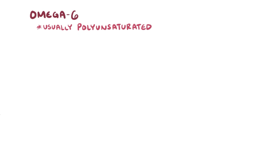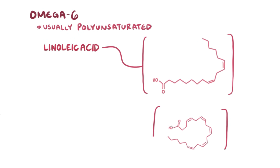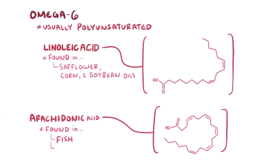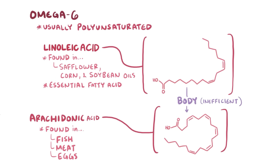Omega-6 fatty acids are also usually polyunsaturated and include linoleic acid and arachidonic acid. Linoleic acid is found in oils like safflower, corn, and soybean oils. Arachidonic acid is found in animal sources like fish, meat, and eggs. Our bodies can convert linoleic acid into arachidonic acid, but once again the process is inefficient. Because ALA and linoleic acid can only be obtained in the diet, they're considered essential fatty acids.